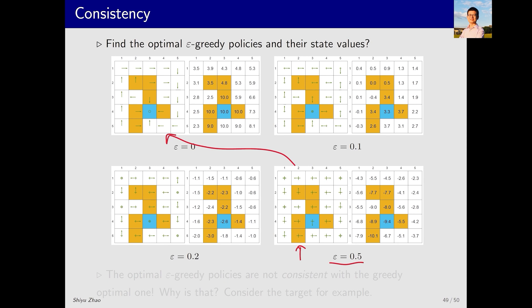So, what does this tell us? It suggests that if you want to use the MC greedy approach, your epsilon cannot be too large. Alternatively, a trick is to start with a larger epsilon for stronger exploration at the beginning, and then gradually reduce epsilon to 0, eventually yielding an optimal policy.